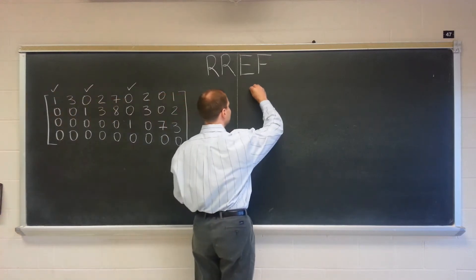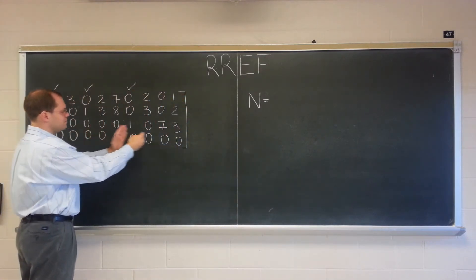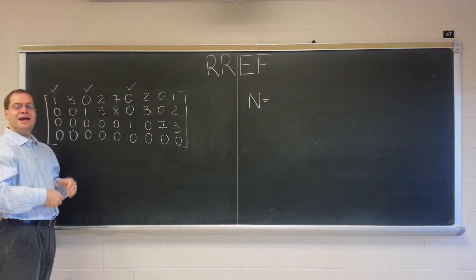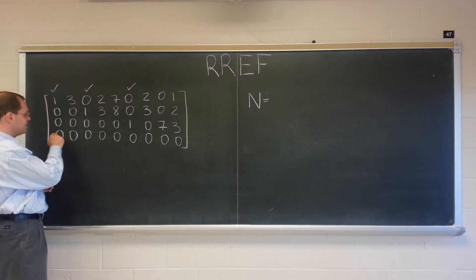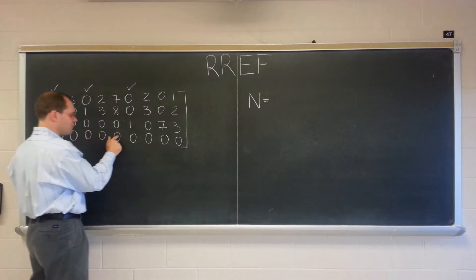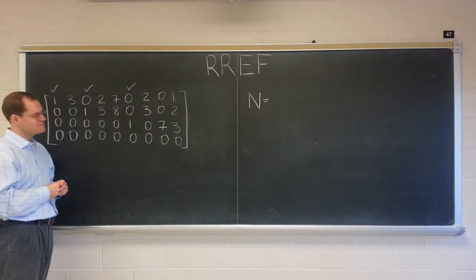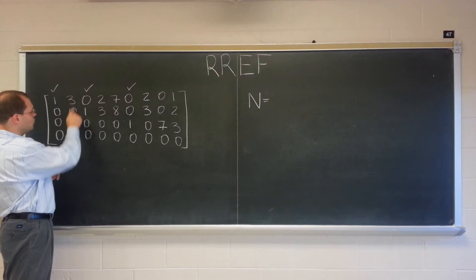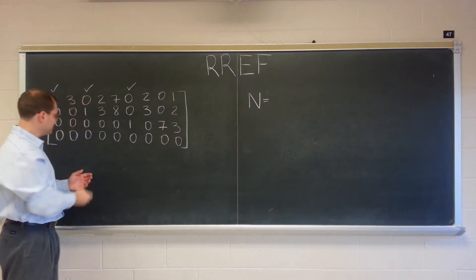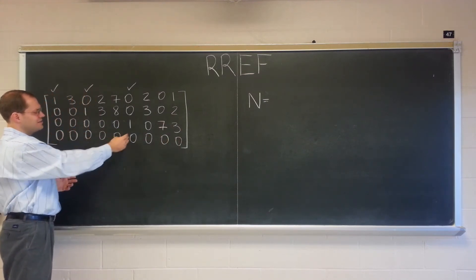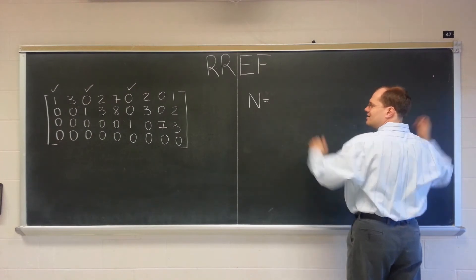So the null space is now at our fingertips, thanks to the row-reduced echelon form. And of course, it's every non-pivot column that contributes a new dimension to the null space. Every element in the null space will be nine-dimensional. So now I'm regretting how wide I made this matrix. And there will be six dimensions in the null space — of course, it would have been easier to count the pivot columns and subtract from nine. So I now have the challenge of fitting six columns in this space.